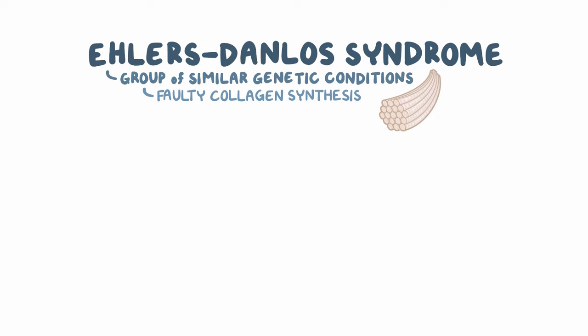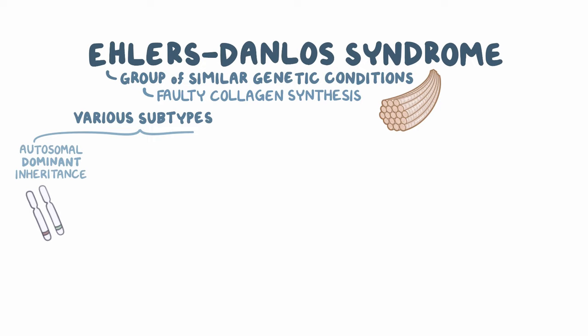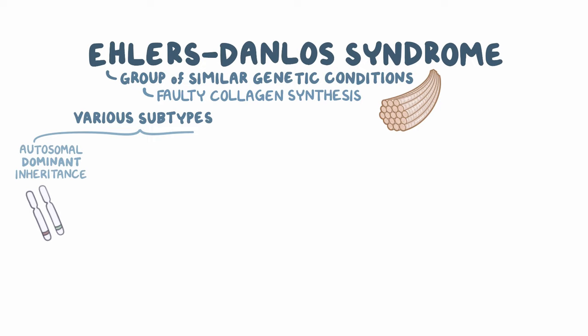As a quick recap, Ehlers-Danlos syndrome is a group of similar genetic conditions caused by faulty collagen synthesis. There are various subtypes, some of which follow autosomal dominant inheritance, whereas others follow autosomal recessive inheritance. The hallmarks of symptoms are stretchy skin, easy bruising, and joints that are super flexible.